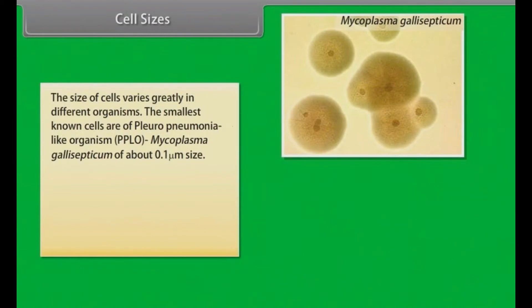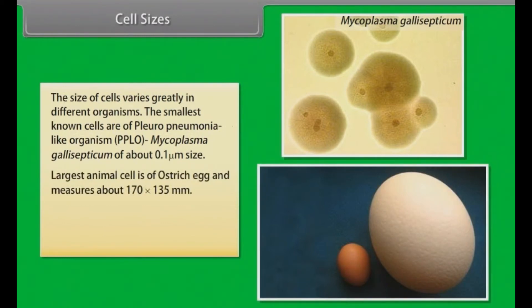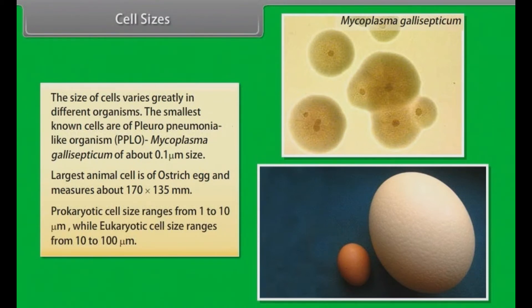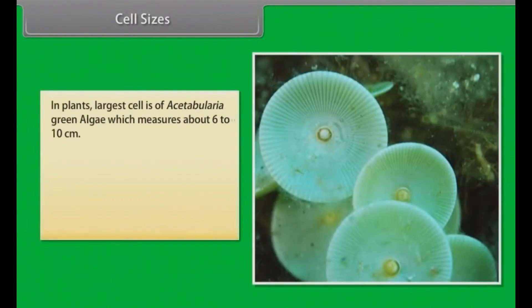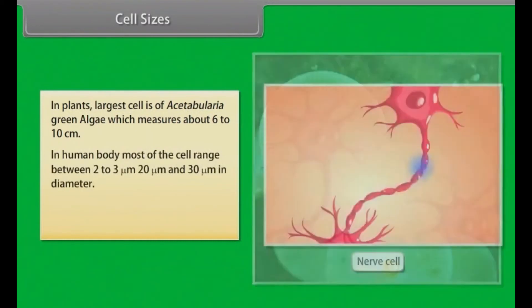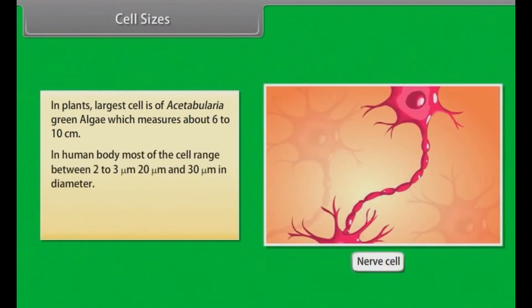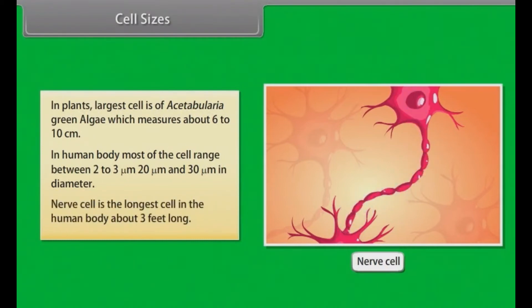Cell sizes. The size of cells varies greatly in different organisms. The smallest known cells are of pleuro-pneumonia-like organisms — that is, PPLO — Mycoplasma gallisepticum, of about 0.1 micrometer in size. The largest animal cell is the ostrich egg, measuring about 170 by 135 millimeters. Prokaryotic cell size ranges from 1 to 10 micrometers, while eukaryotic cell size ranges from 10 to 100 micrometers. In plants, the largest cell is Acetabularia, a green algae measuring about 6 to 10 centimeters. In the human body, most cells range between 20 to 30 micrometers in diameter. The nerve cell is the longest cell in the human body, about 3 feet long.